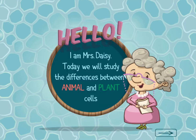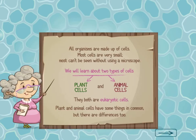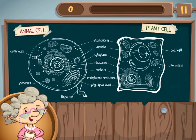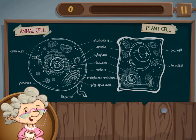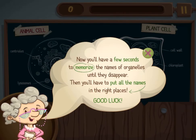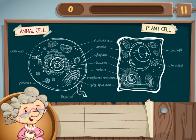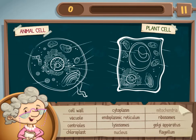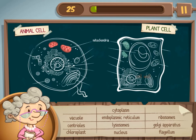Legends of Learning presents Mrs. Daisy's Lesson Game. This is a science game that makes learning about parts of a cell for plants and animals fun and easy to understand. Enjoy an instruction lesson with Mrs. Daisy as she teaches you about the differences between a plant and an animal cell.